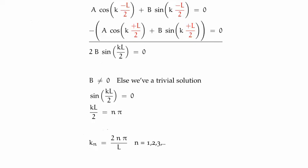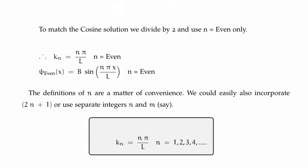If you are not sure that this works, simply plug in the values for the principal quantum number and you will see that you get the same answers. So we match the cosine solutions for the wave number by dividing by 2 and only using n as an even integer, and hence we have the even solution to the time independent Schrödinger equation. Once again we are calling it even because for these solutions the principal quantum number must be even.